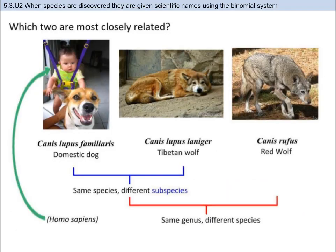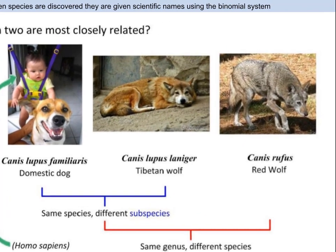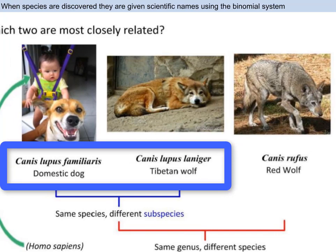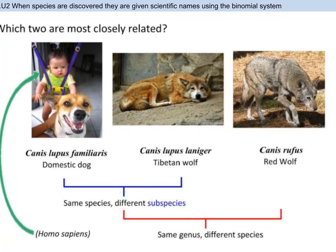Here we have three dog-looking organisms and one baby human. You might think they're three dogs, but that's not the case. Compare their common names and their scientific names. If you only had their common names to go on, you might simply put the two on the right in the same category. Instead, the domestic dog on the left and the Tibetan wolf in the middle are the same species, Canis lupus, and the red wolf is a different species, Canis rufus.